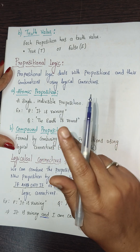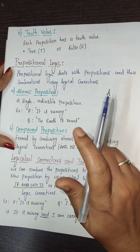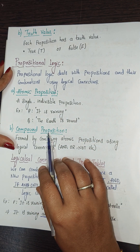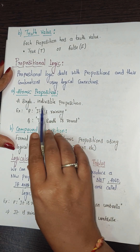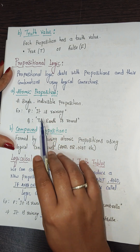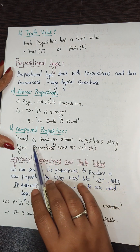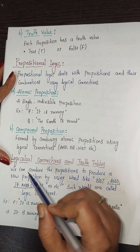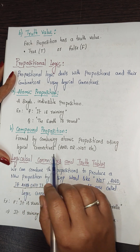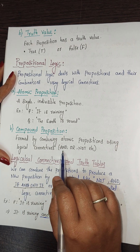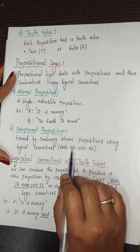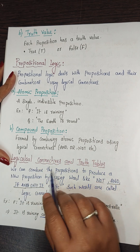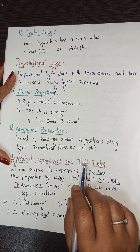A compound proposition is formed by combining atomic propositions using logical connectives such as AND, OR, NOT, etc.